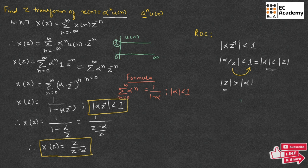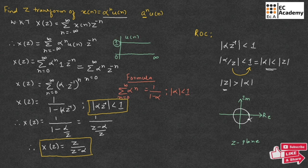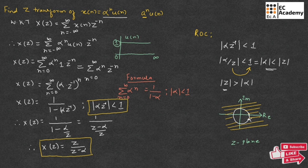Let us take the z-plane where the x-axis has the real term and the y-axis has the imaginary term. On this z-plane, let us mark the point alpha and draw a circle with radius alpha. The region of convergence is where |z| > |alpha|, which means the ROC is the region outside this circle. This is the region of convergence for the given problem.